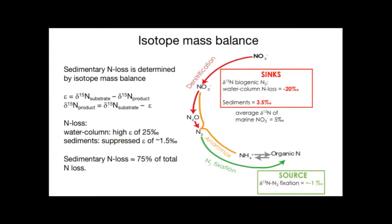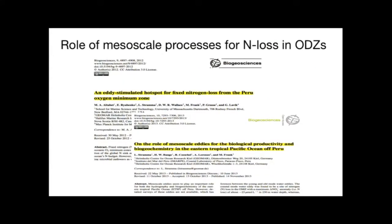N2 fixation has a delta 15N of about minus 1 per mil because that process doesn't fractionate significantly. Taking the terms for water column nitrogen loss and N2 fixation with the average estimates shown earlier, in order to isotopically balance the budget we would need more than 200 teragram N per year of sedimentary denitrification. That's rather high and makes it difficult to balance the nitrogen budget. This uncertainty is also due to spatial and temporal variability.